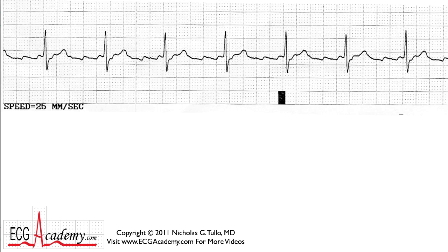So we have a regular rhythm at 68 beats per minute. Now of course what we should do is look for atrial activity — what's the atrium doing? The best place to look for P waves is in front of the QRS complex. If you look in front of this QRS, there's a bump right here that kind of looks a little like a P wave. Looking at the next QRS complex, it seems like there's the same signal there, and there's a bump in front of every QRS complex. If this was a P wave and you were to measure the PR interval, it would seem to be somewhat short — perhaps 120 milliseconds or so.